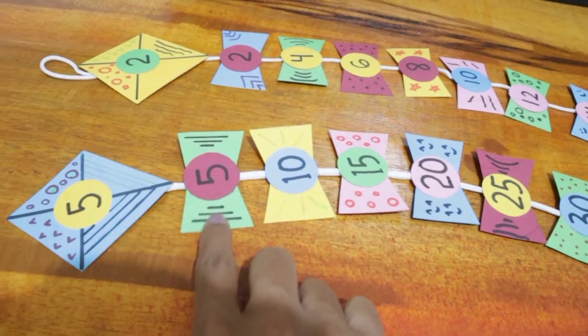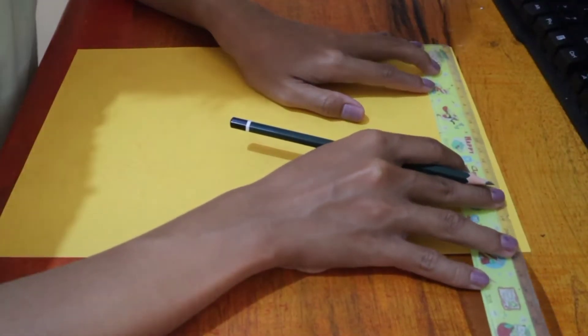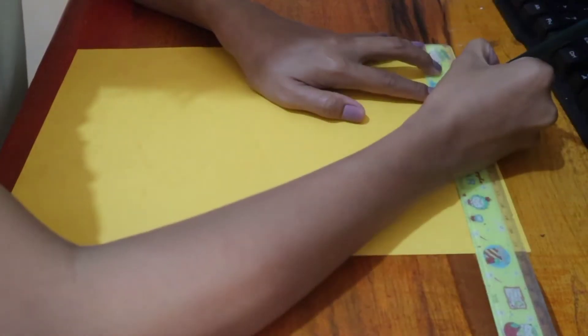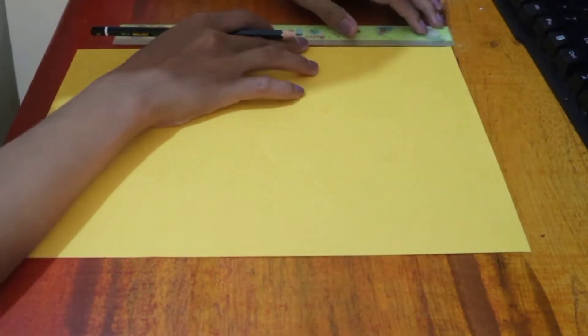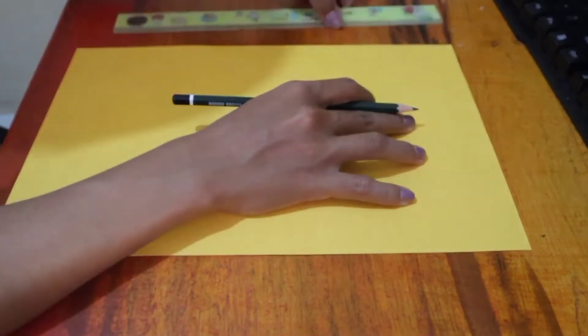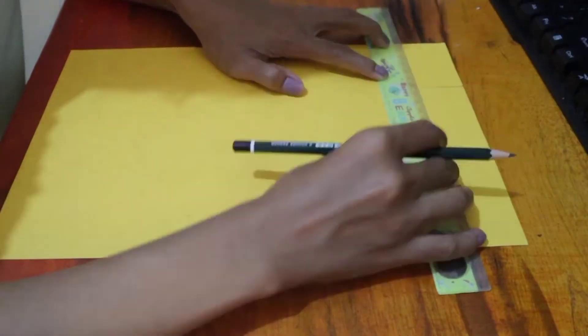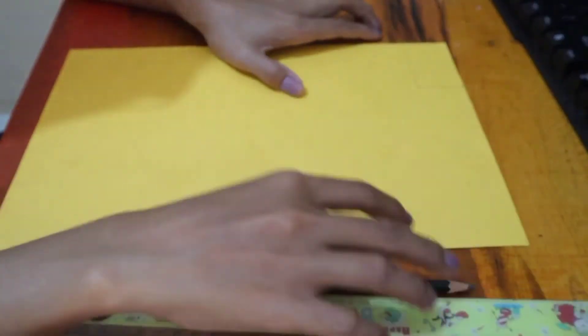Okay, we're going to make this. So first we will make a rectangle. You can decide the size. The length of my rectangle is six centimeters and the width is four centimeters.